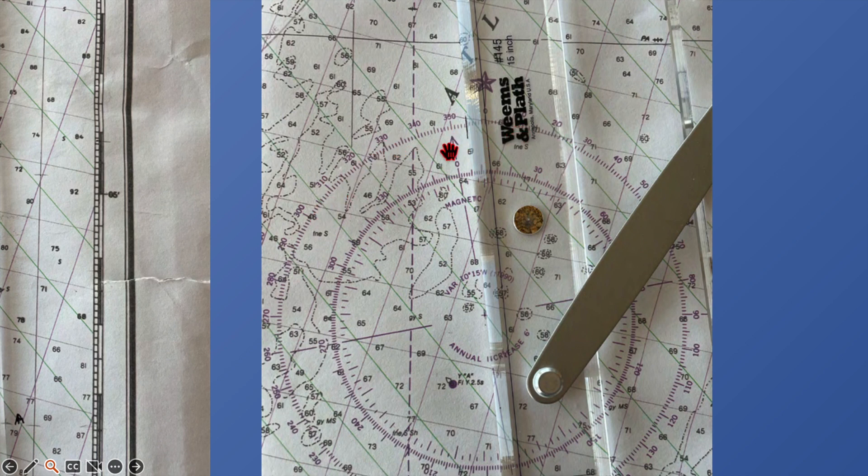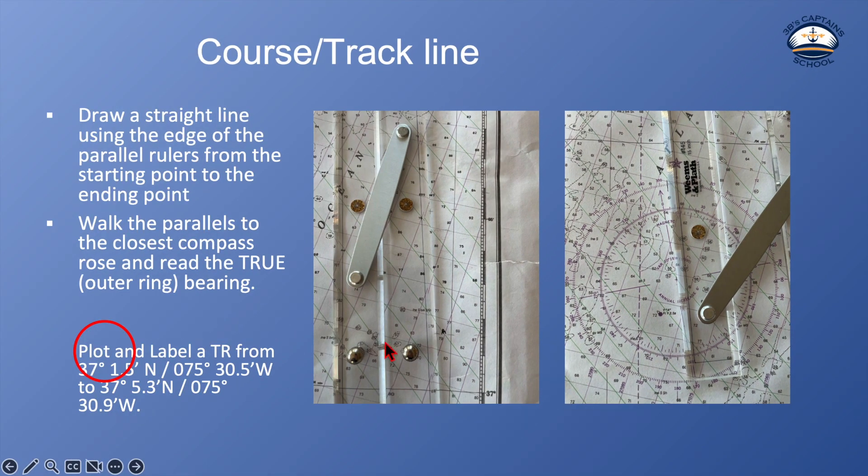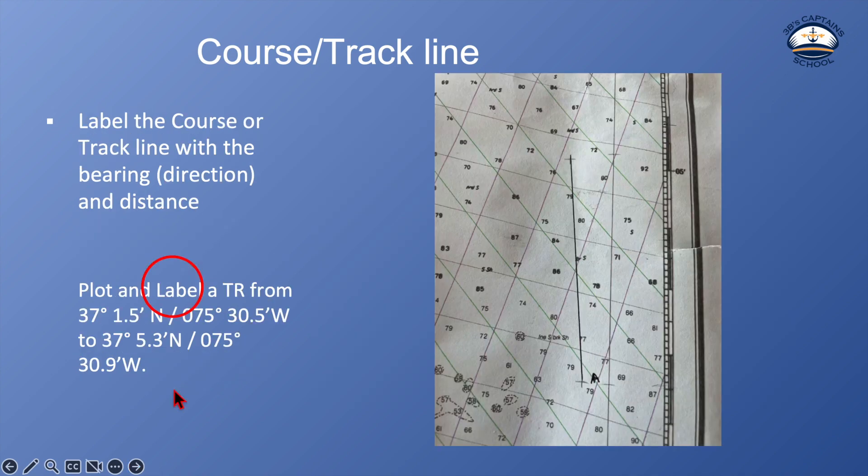And then the top of the edge of the parallel rulers, I go to the outside compass ring. This is true. And I can see that this course line is, that's 350 right there, just above the hand cursor. And then I made the mark right there. So it is one, two, three, four. So it's about 354, 355 is where that track line ends up. You can see that highlighted there, circled there.